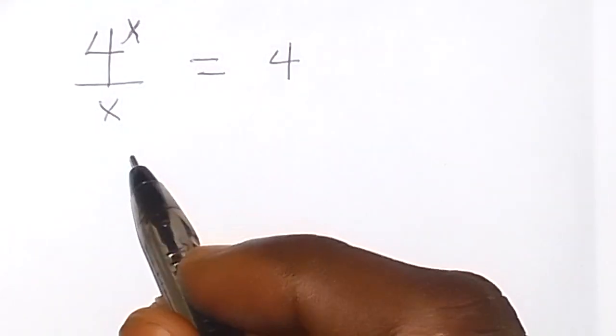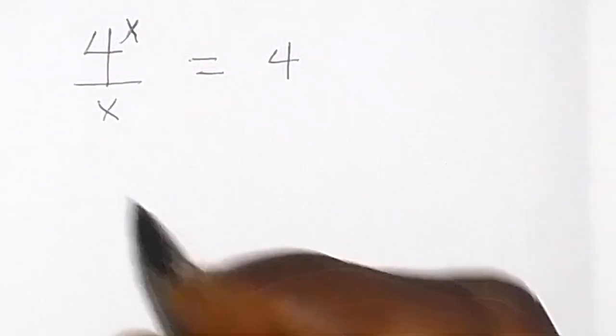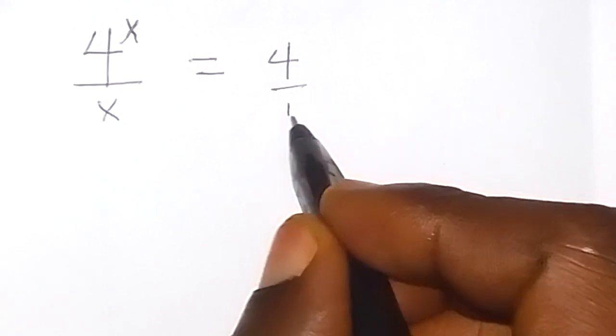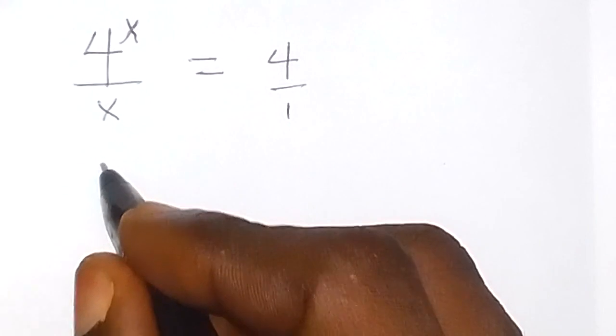Here we want to solve for x in this interesting exponential equation. We have 4 over 1 here, so let's cross multiply. From here, 4 to the power x multiplied by 1 still gives 4 to the power x.